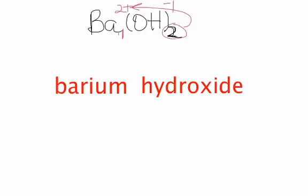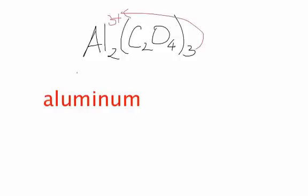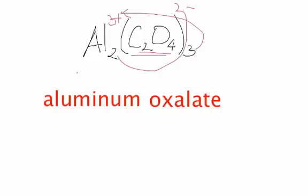Let's take a look at Al2(C2O4)3. Al stands for aluminum. And we know that aluminum has a 3+ charge. So that came from there. And this 2 came from this right here. And this, if you look on your polyatomic ions, is oxalate. So it's aluminum oxalate.